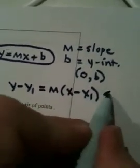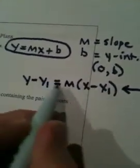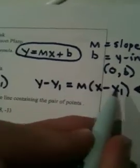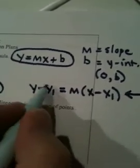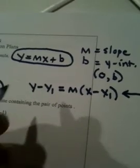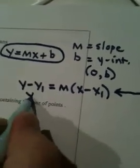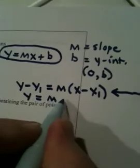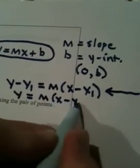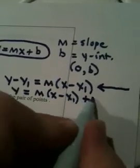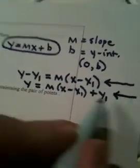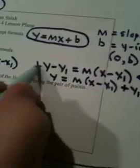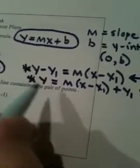Now, some books call this right here the point slope formula. I believe your book does. Some of you may have remembered from 1033 that what they did is they got y by itself. They wrote this as y equals m times (x minus x sub 1) plus y sub 1. So, either one of these two can be thought of as the point slope formula.